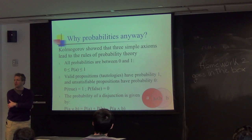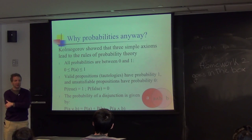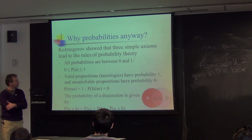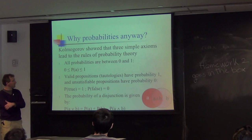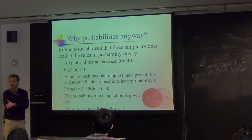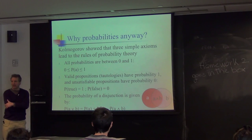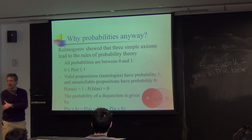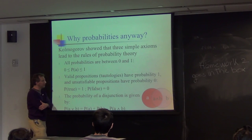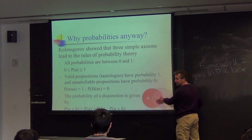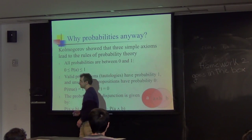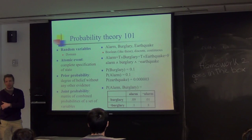Why use probabilities? I'm not going to go into the epistemological ideas of why probabilities are good or not good to use and what the semantics mean. I'll just go through some simple definitions. Kolmogorov showed that there are three simple axioms to probability theory: probabilities exist between 0 and 1; valid propositions have a probability of 1; and unsatisfied propositions have a probability of 0. The probability of the disjunct of A and B is the probability of A plus the probability of B minus the probability of the conjunction A and B — subtracting out the overlap.